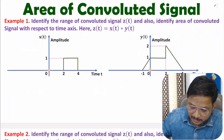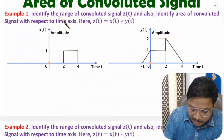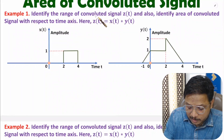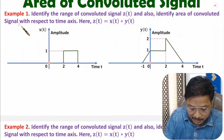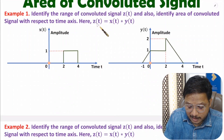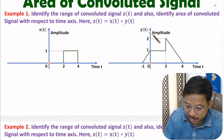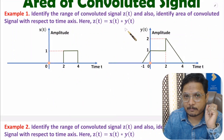In the first question, we need to identify the range of convoluted signal Z(t) and also identify the area of convoluted signal with respect to the time axis. Here, the convoluted signal Z(t) is the convolution between X(t) and Y(t). First, I will calculate the range of the convoluted signal.